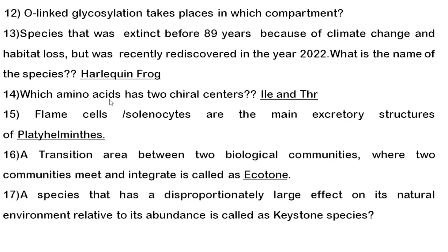Seventeenth question: a species that has a disproportionately large effect on its natural environment relative to its abundance is called a keystone species. Even though keystone species are very few in number, their removal causes a drastic effect on the community.